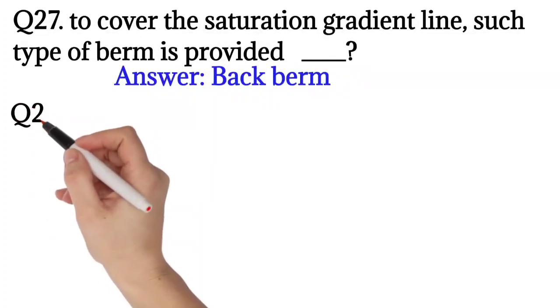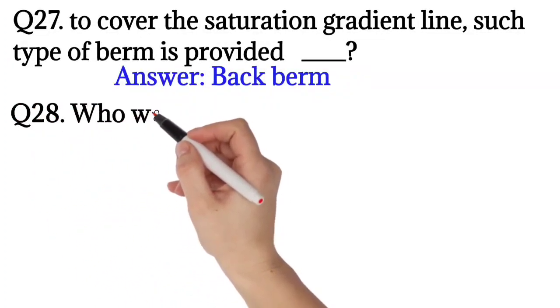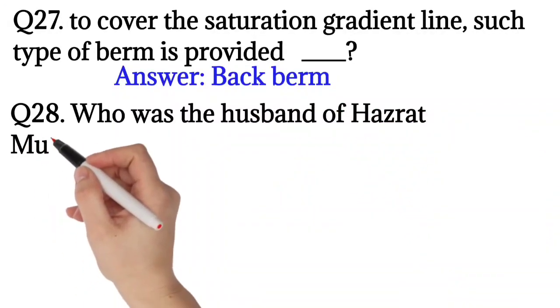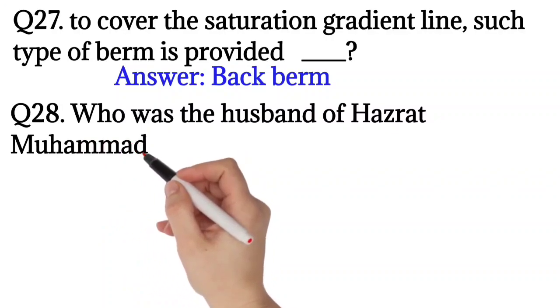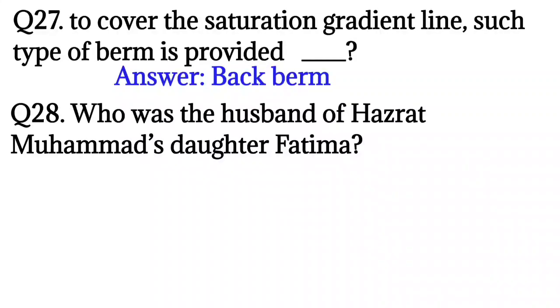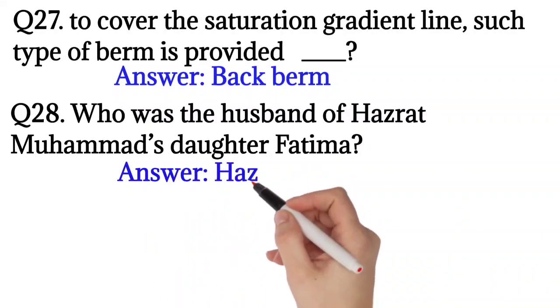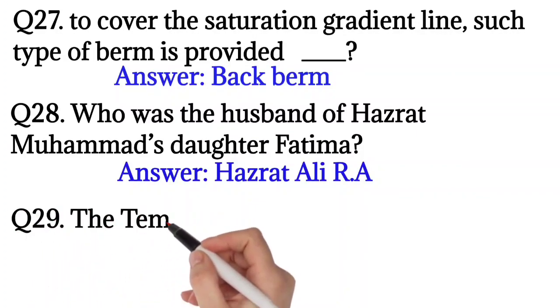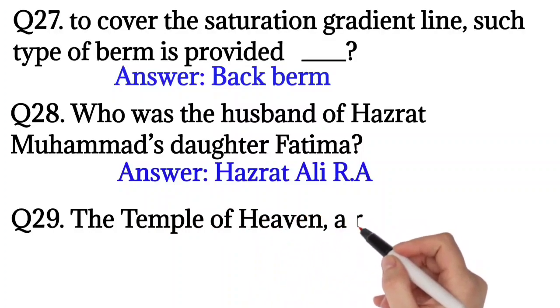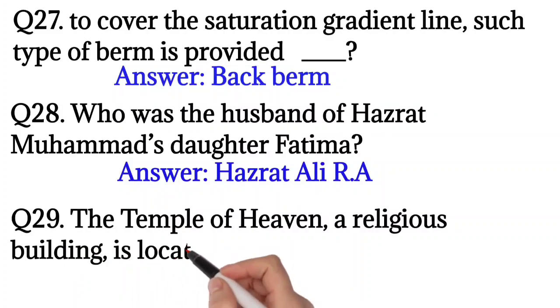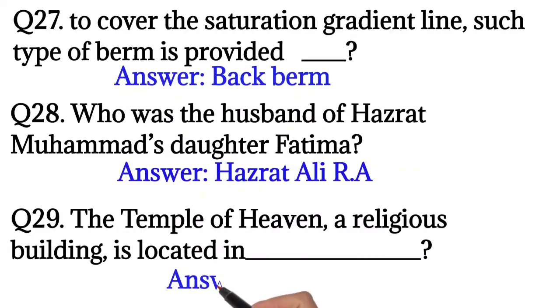Question number 28: Who was the husband of Hazrat Muhammad's daughter Fatima? Hazrat Ali is the husband of Fatima. Question number 29: The Temple of Heaven, a religious building, is located in China. So the right answer is China.